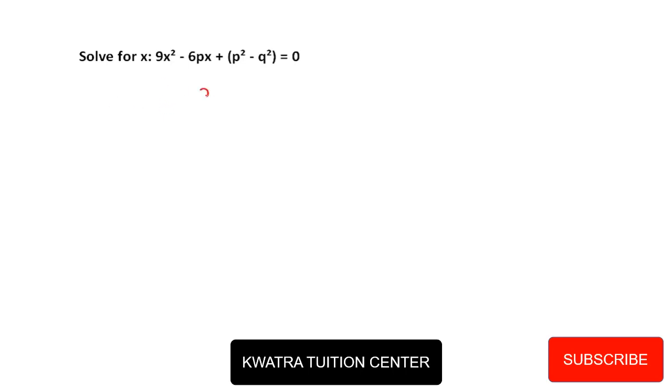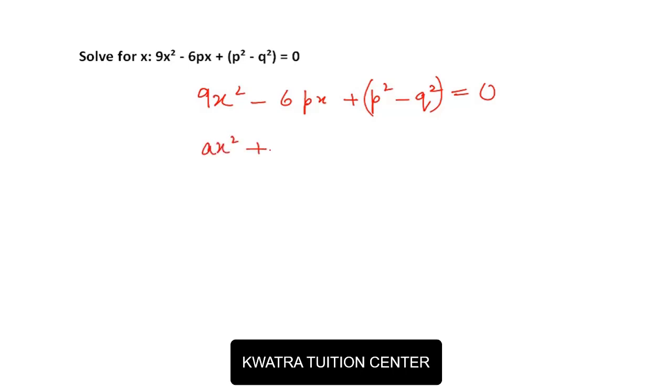This is the equation: 9x² - 6px + p² - q² = 0. We will compare this with the standard equation. The standard equation is ax² + bx + c = 0.